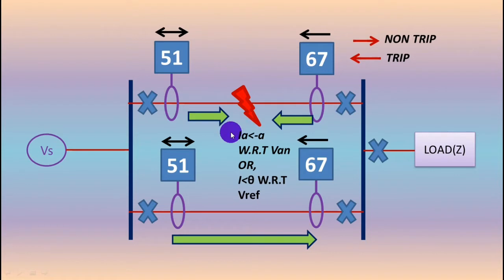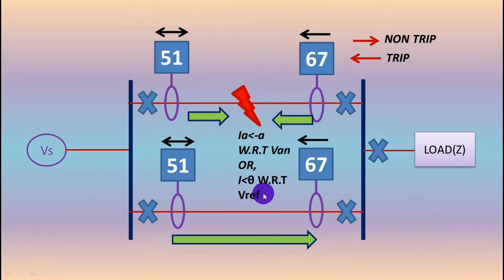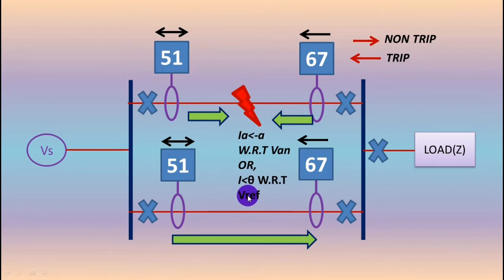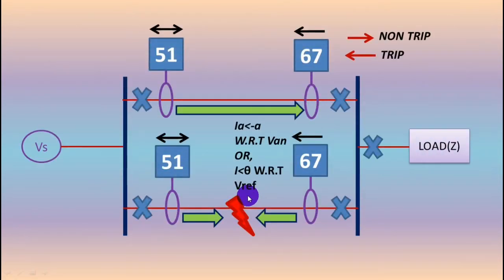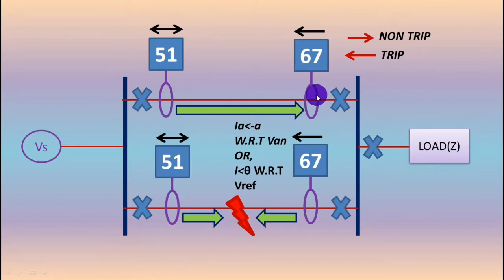Suppose this is a fault condition — these two lines are parallel. The fault current is I lagging angle theta with respect to V_AN, or I at angle theta with respect to V reference. This is the lagging angle and this is the leading angle. In the previous video I explained why the current leads the reference voltage if the fault occurs in this direction on this line. Here the direction is reversed, but the magnitude of the fault current and the phase angle relationship between current and voltage remains the same.